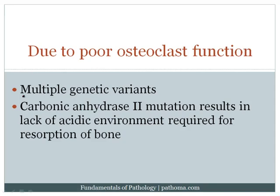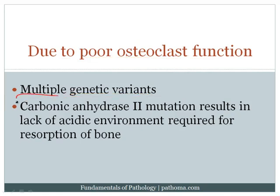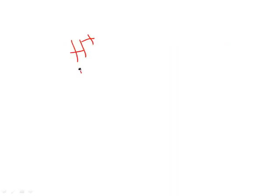Osteopetrosis is due to poor osteoclast function, and there are multiple genetic variants. The carbonic anhydrase 2 mutation is particularly high yield because it ties into physiology. An acidic environment is necessary to remove calcium and resorb bone.